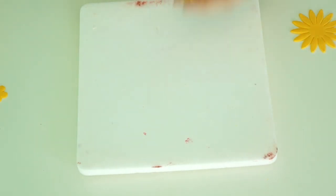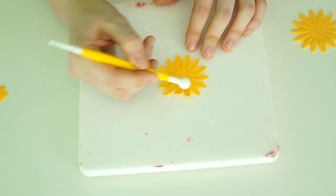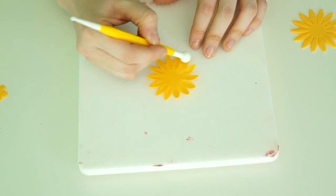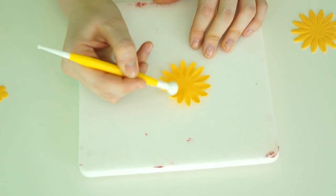Okay, so now I've got those cut out, what I'm going to do is turn them over and just lightly run my ball tool over them just to give the petals some shape so they're not completely flat.